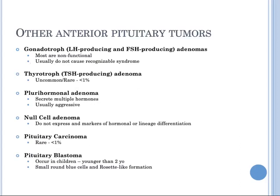Other anterior pituitary tumors include: most gonadotrope (LH and FSH producing) adenomas, which are non-functional and usually do not cause a recognizable syndrome. Thyrotrope (TSH producing) adenomas and pituitary carcinomas are rare, accounting for less than 1% of pituitary tumors. Plurihormonal adenomas secrete multiple hormones and are usually aggressive. Null cell adenomas do not express any markers of hormonal or lineage differentiation. Pituitary blastoma occurs in children typically younger than 2 years and is morphologically composed of immature blastema-like cells, small round blue cells, and rosette-like formations.